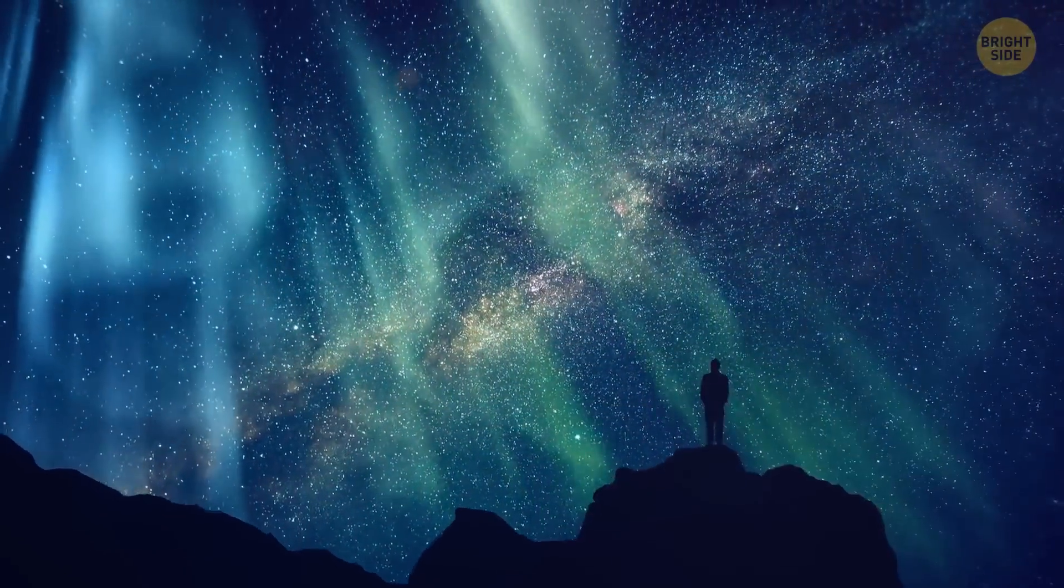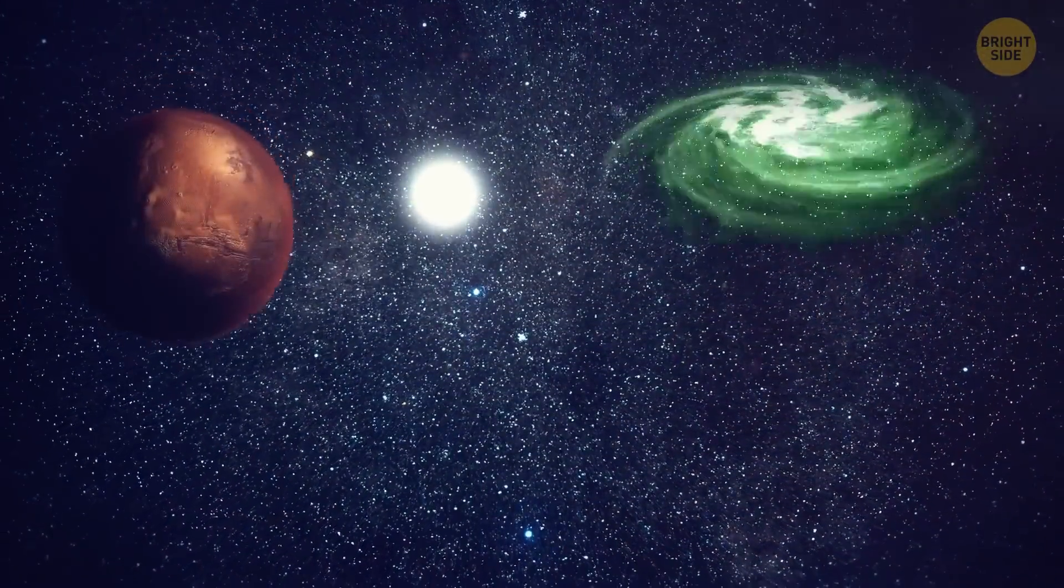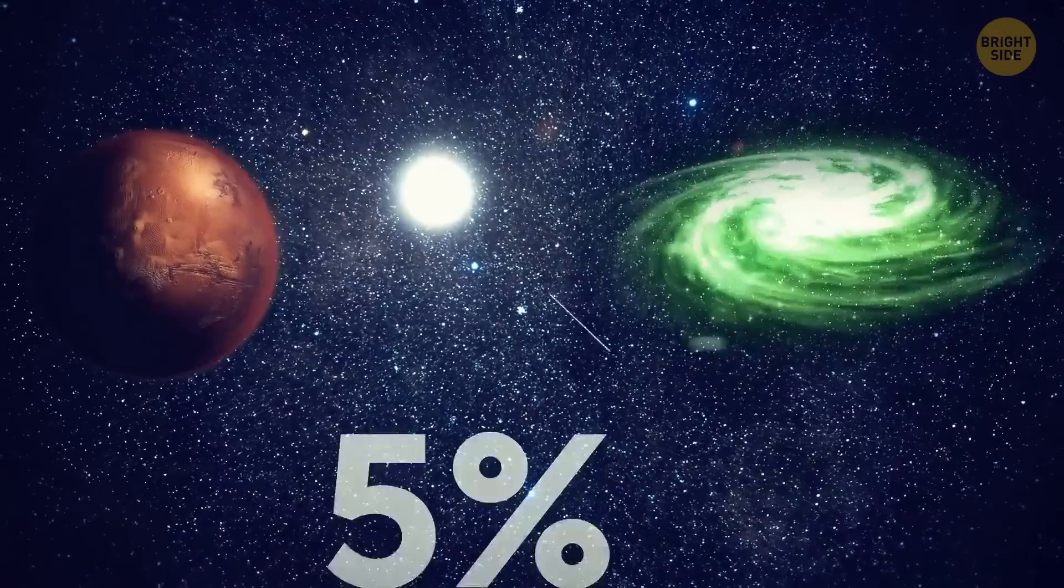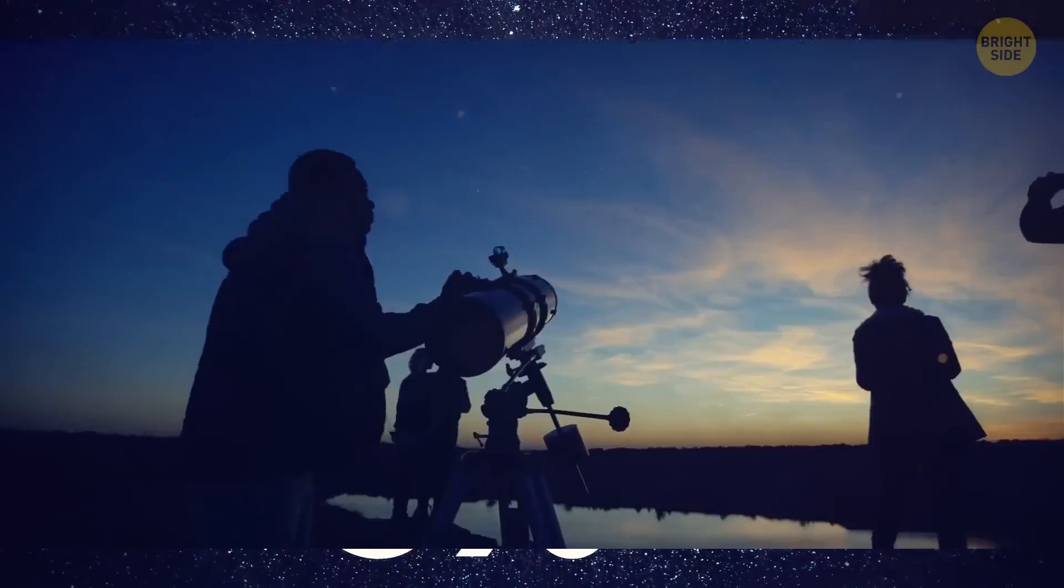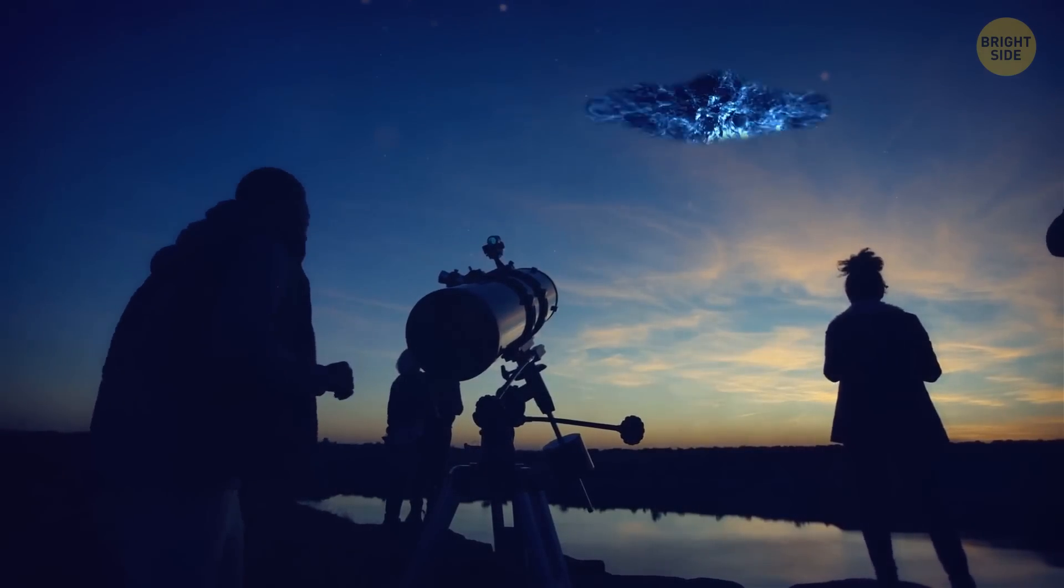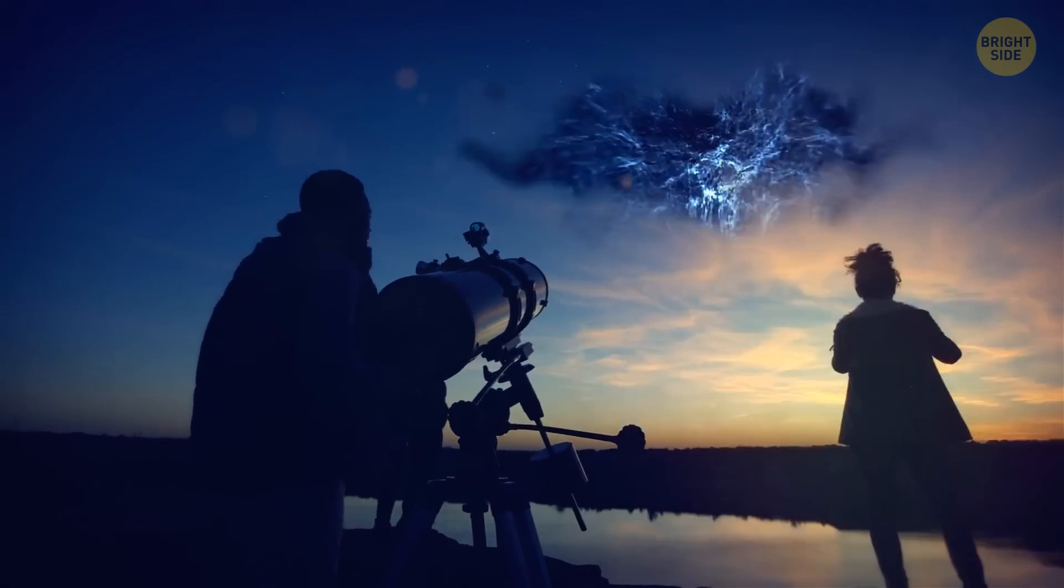Moreover, the normal matter we can see, like stars, planets, and galaxies, only make up about 5% of the universe. So even though we can't see dark matter, there's actually more of it in the universe than everything we can see.